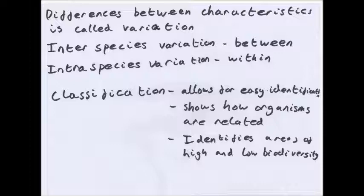Classification allows for easy identification of species and shows how organisms are related. For example, humans and apes share around 97% DNA, which shows we are very closely related, meaning we'll be in the same family or even the same genus. It also identifies areas high and low in biodiversity, because biodiversity is a measure of the total number of different species in an area. To count species you need to identify them, which is why a classification system is important.